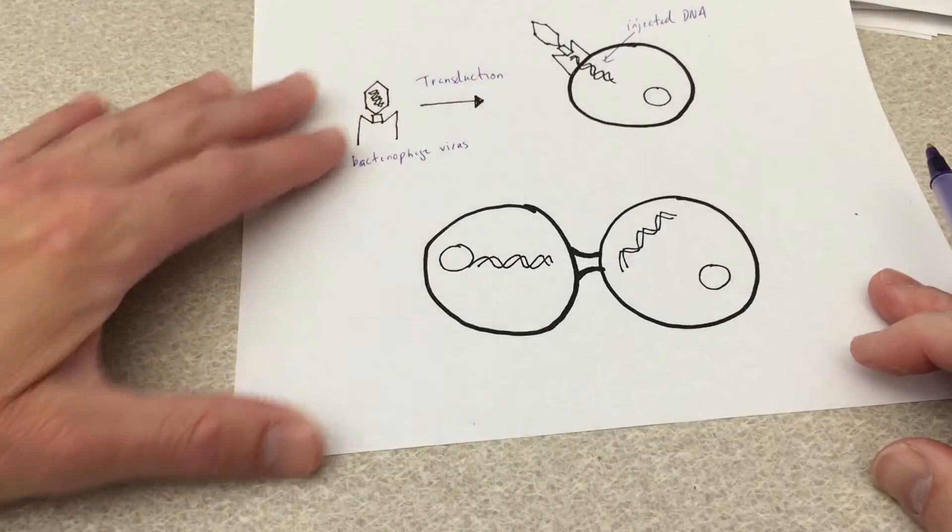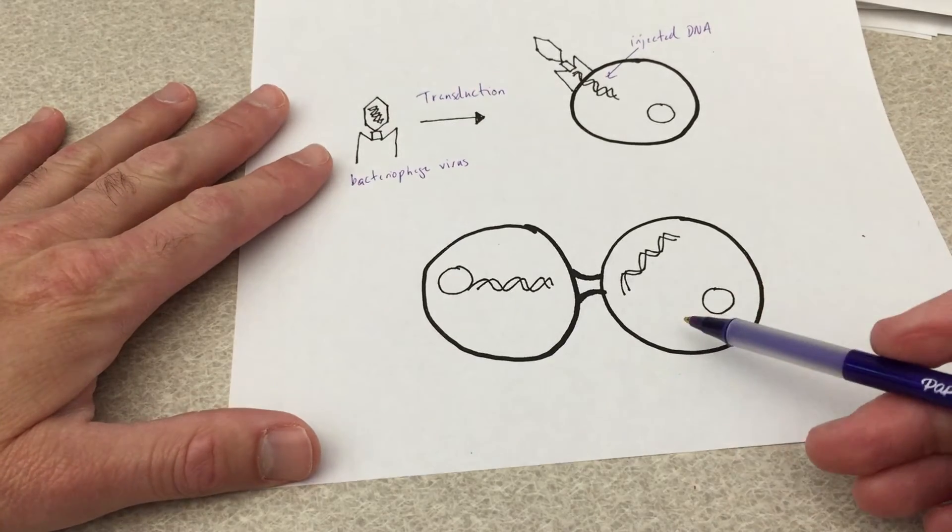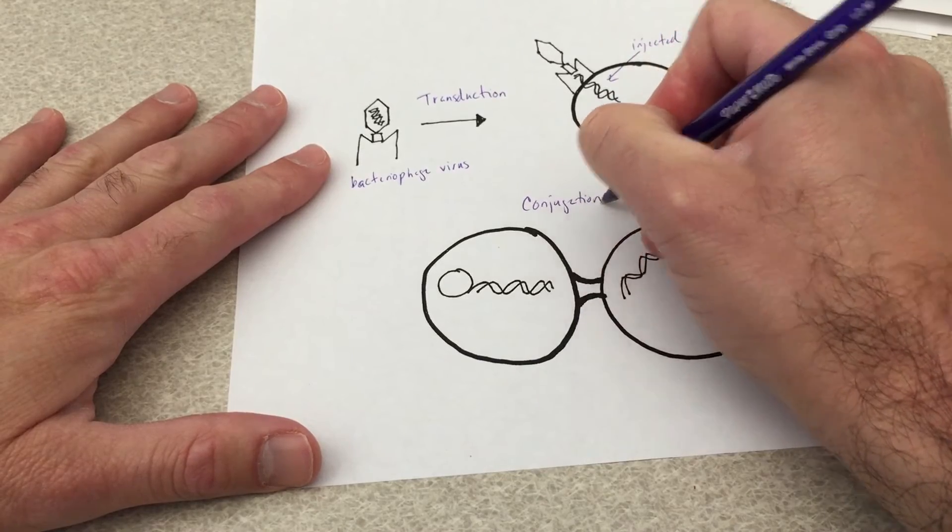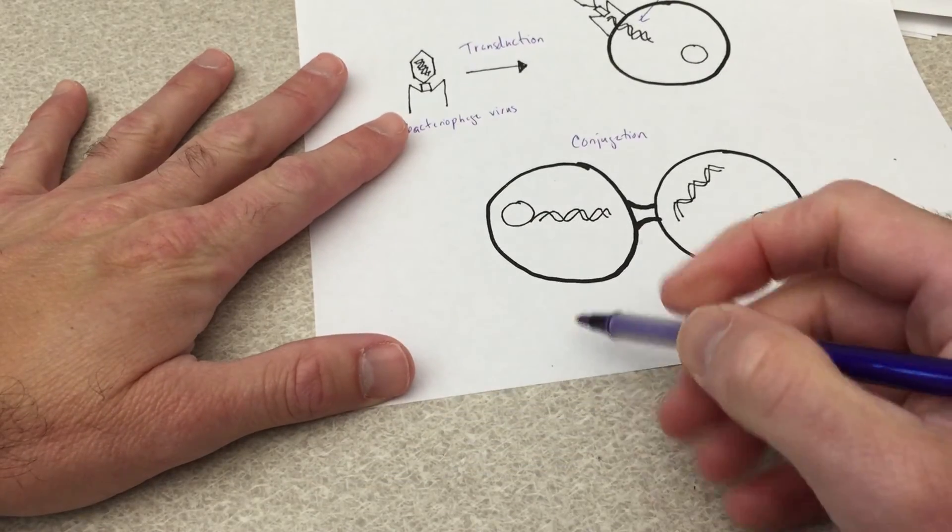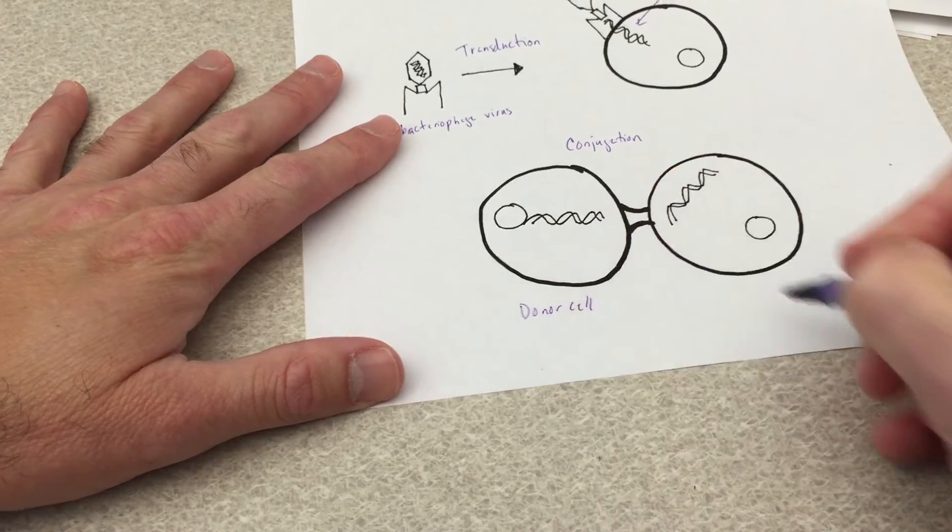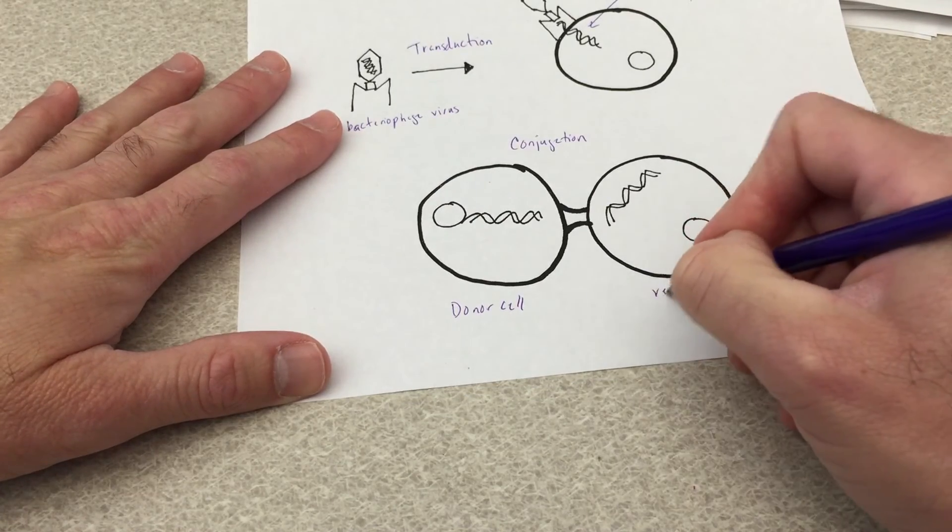In the third mechanism, we have bacterial mating, or bacterial conjugation. So here we have a donor cell, and here we have a recipient cell.